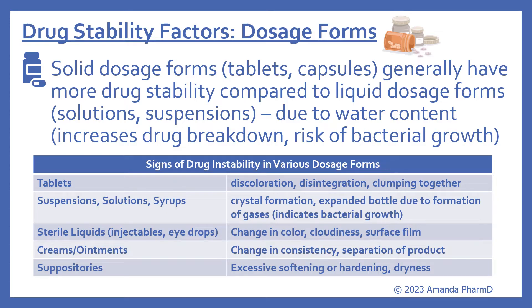Another factor is dosage forms. Solid dosage forms like tablets and capsules generally have more drug stability compared to liquid dosage forms like solutions and suspensions, due to their water content — higher water content causes an increased risk of drug breakdown and bacterial growth. Signs of drug instability by dosage form include: tablets showing discoloration, disintegration, or clumping; suspension solutions and syrups showing crystal formation or an expanding bottle due to gas formation, which indicates bacterial growth; sterile liquids such as injectables and eye drops showing a change in color, cloudiness, or surface film; creams and ointments showing a change in consistency or separation; and suppositories showing excessive softening, hardening, or dryness.